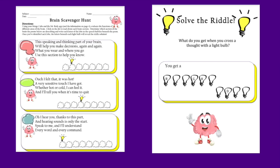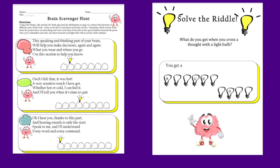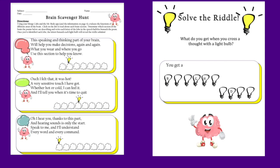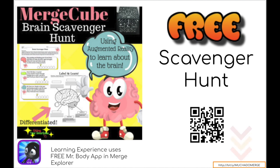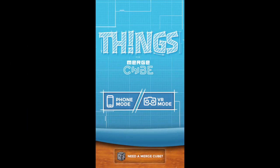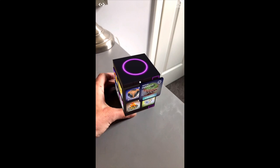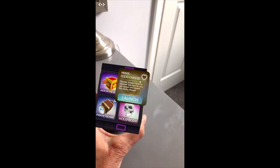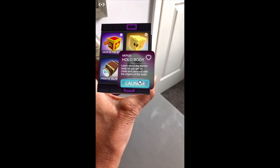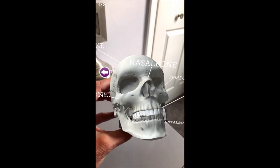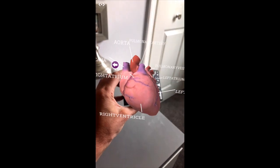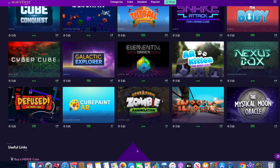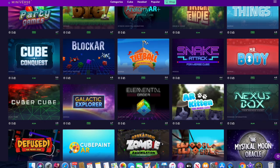So they hold a Merge Cube, view the Augmented Reality experience, and then complete the scavenger hunt. If you're following along in the slideshow with the bit.ly link, you can download a free copy of the scavenger hunt, or you can scan this QR code and get the same free copy. Here's another fun app called the Things app, where students have a bunch of games and interactive items that they can view. But my favorite one is Hollow Body, where they can view a skull and a beating heart. Needless to say, there are a lot of apps for students to explore within the Merge Cube.